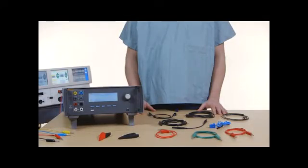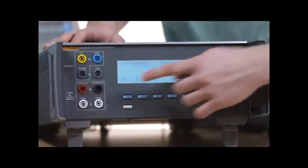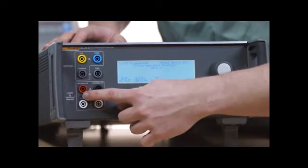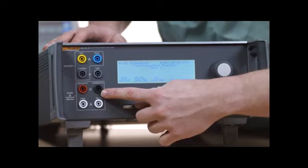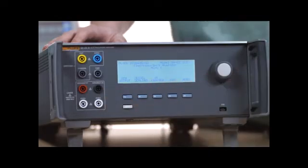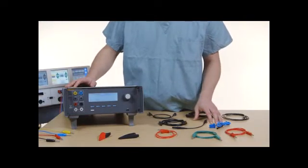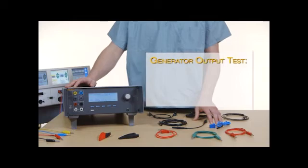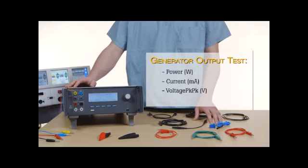During the generator output test, the QAES3 connects the variable load resistance from the variable high active electrode to variable low neutral electrode. The test measures the ESU output across that load and shows the measured generator output power, current, voltage peak-to-peak, and crest factor.